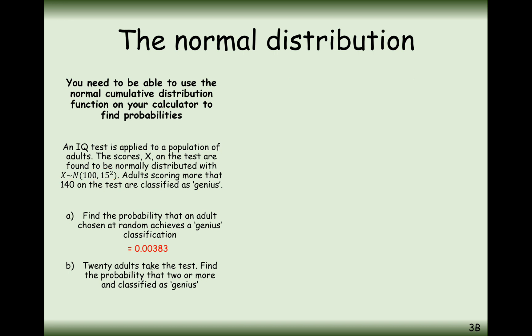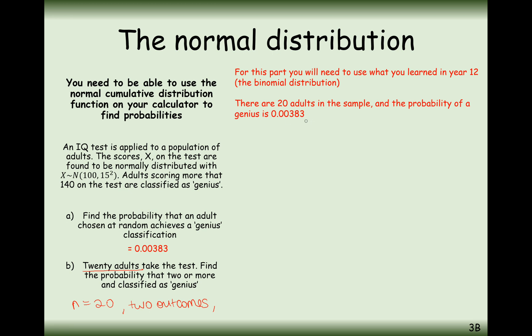Then we move on to part B. In fact, what's happening in part B is it's no longer a normal distribution question, it's a binomial distribution question. You can tell this because we have 20 adults, so n equals 20. We have either they are a genius or not a genius, so we only have two outcomes. And generally, if we're picking people at random, the probability of someone being a genius is not going to affect the next person. So the probability of successfully picking a genius is 0.00383.